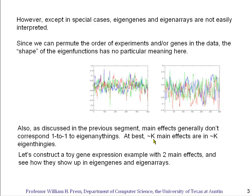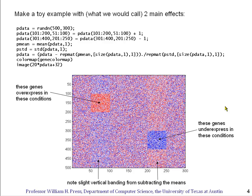But let's see whether that is a reasonable expectation. I'm going to construct a toy gene example here that has exactly two main effects, and everything else will be just noise, and we'll see how this shows up in the eigengenes and eigenarrays. So here's our toy model. Our toy model is that first we take 500 genes by 300 experiments, and we put independent normal deviates into each of those cells. So there's not anything of interest in that.